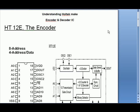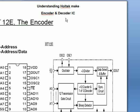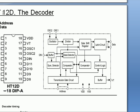Hello, understanding Holtek encoder and decoder IC. The encoder IC is called HT12E and the decoder IC is called HT12D.